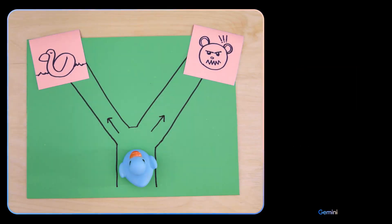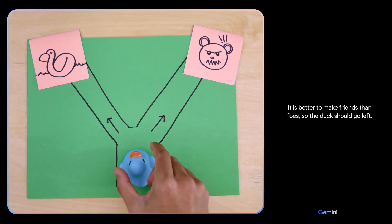Which way should the duck go? Going left leads to a duck, which is a friend. Going right leads to a bear, which is a foe. It is better to make friends than foes. So the duck should go left. Smart choice.